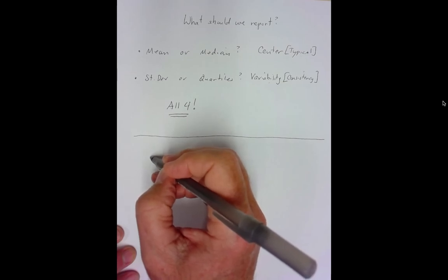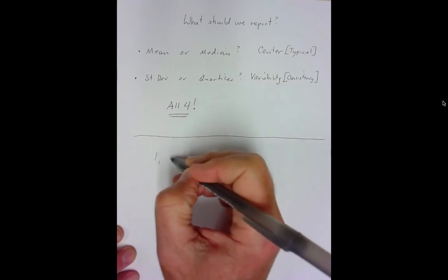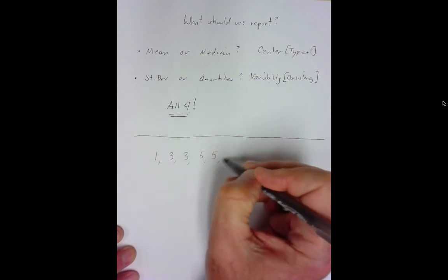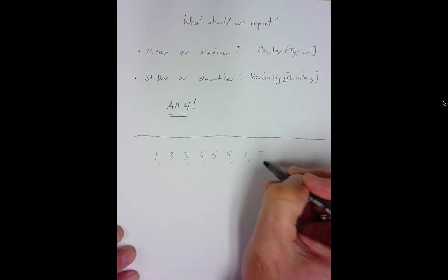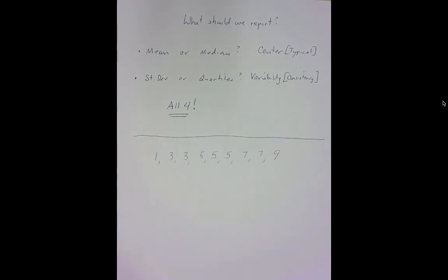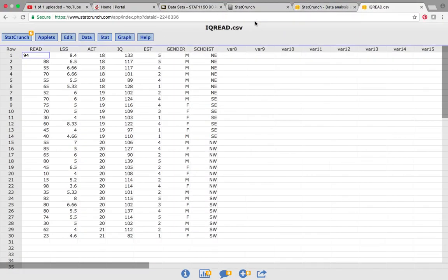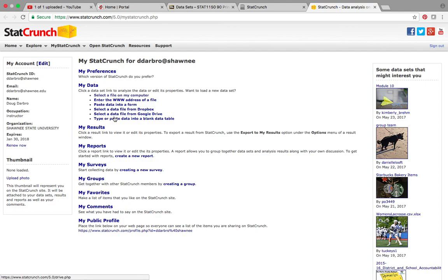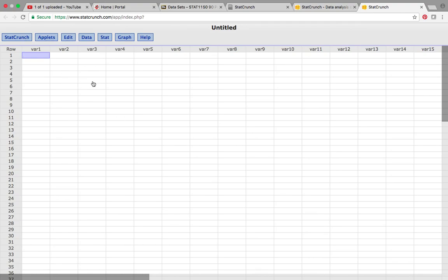Let's start with a data set: 1, 3, 3, 5, 5, 5, 7, 7, and 9. I'm going to go to StatCrunch, type in my own data, and enter those numbers.